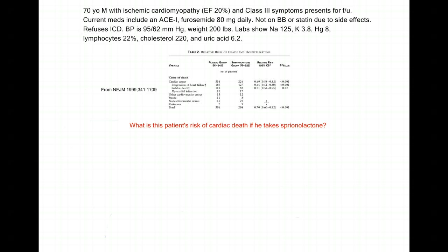So how do we make this calculation? I'm going to need two pieces of information. One, I'm going to need my patient's risk of the outcome of the study — in this case, it's the risk of death. And the next thing I'm going to need is the measure of effect, or the outcome, from the study.